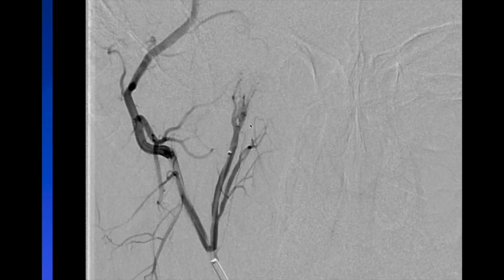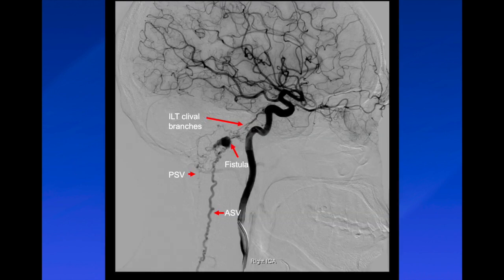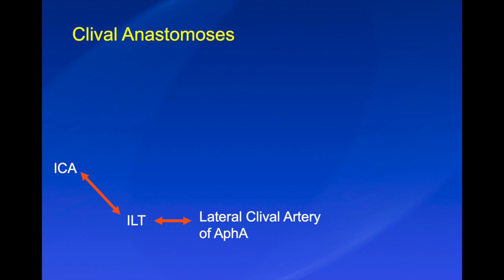For this embolization, particles rather than liquid embolics were used. The ascending pharyngeal artery was treated hoping the fistula would slow enough to resolve spontaneously. However, the ILT-to-lateral clival artery pathway provided robust residual supply. The patient ultimately went to surgery and did very well with surgical ligation. The anastomosis here was: ICA to ILT to lateral clival artery of the ascending pharyngeal artery and then to the ascending pharyngeal artery neuromeningeal trunk — supplying the hypoglossal nerve territory.